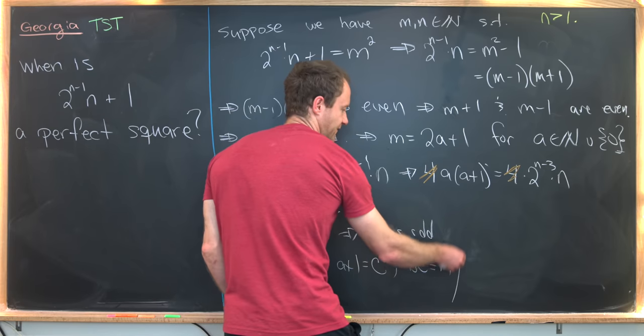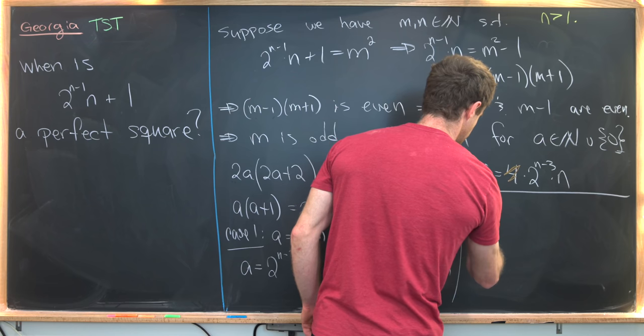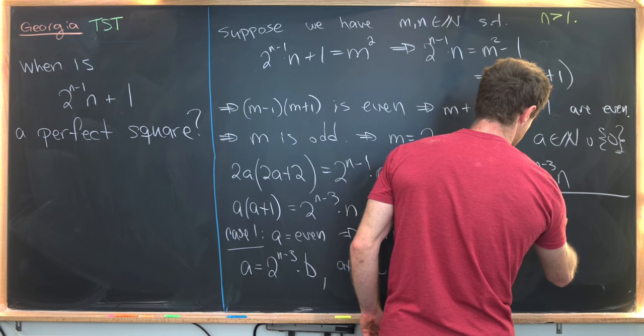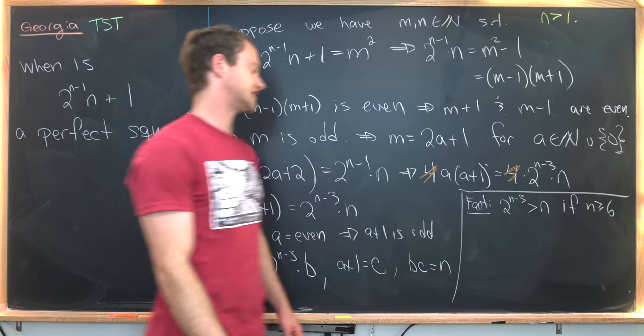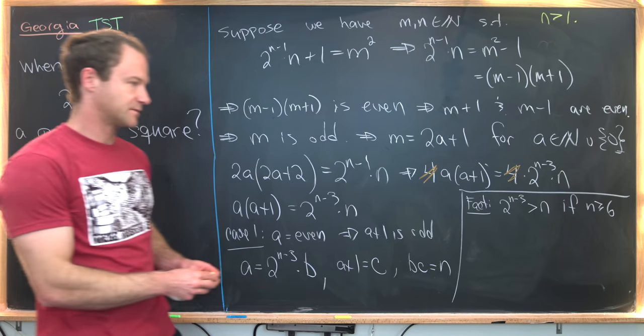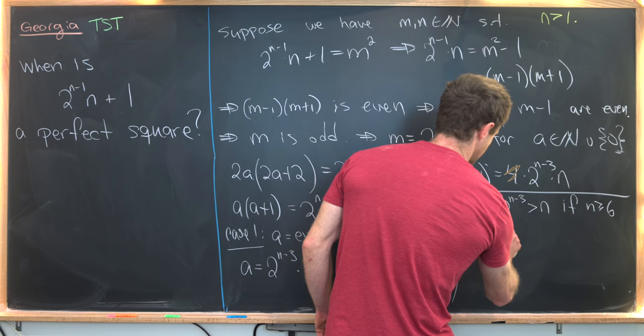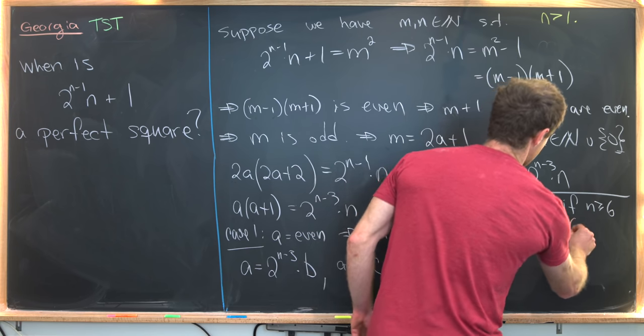But now we'll see a problem. I want to notice that we have the following fact, which we can easily prove with induction. And that is 2^(n-3) is bigger than n if n is bigger than or equal to 6. So like I said, we'll prove this by induction. So notice our base case will be n equals 6.